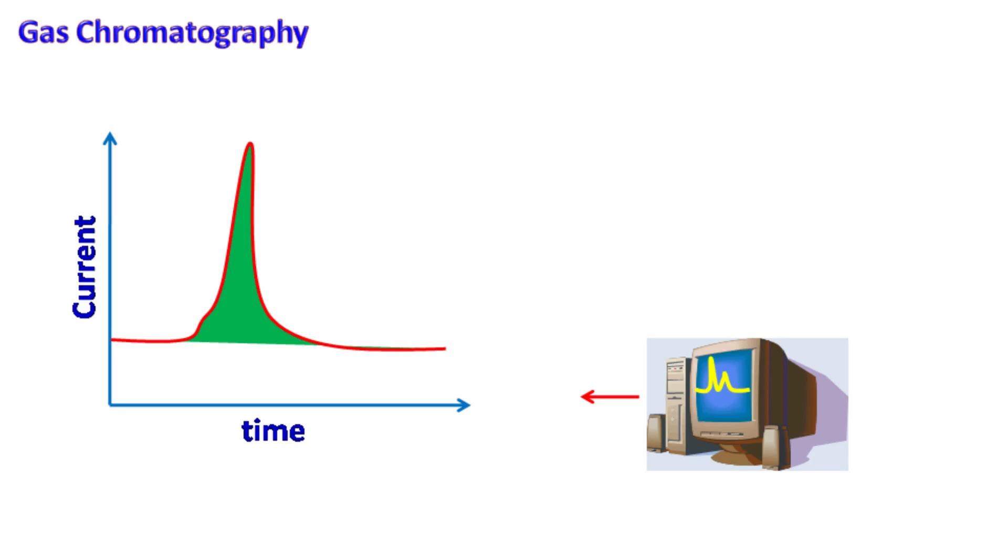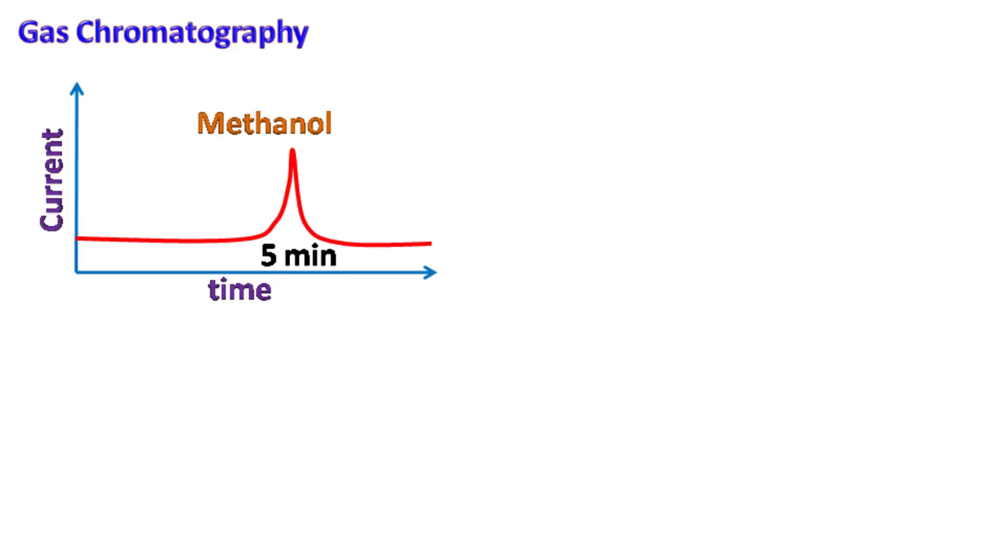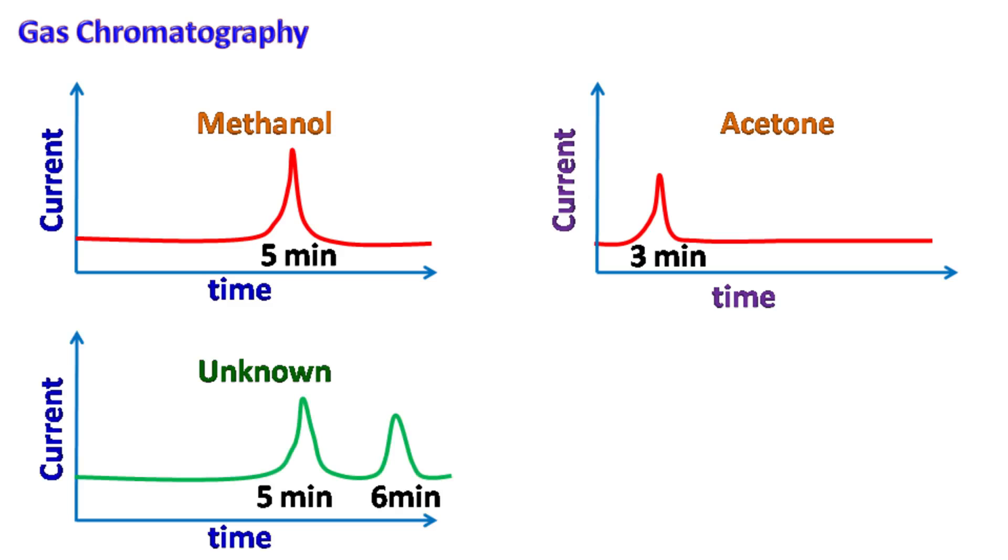Let's understand this with an example. Suppose we run methanol as our sample and the peak of methanol is obtained at five minutes. Next, we run acetone as our sample and the peak of acetone is obtained at three minutes. Next, we run unknown sample and we get this chromatogram.